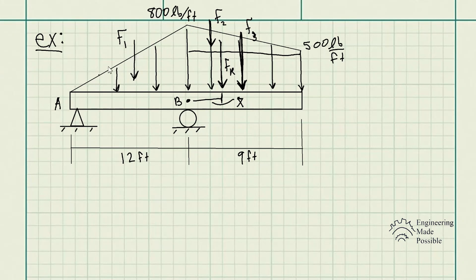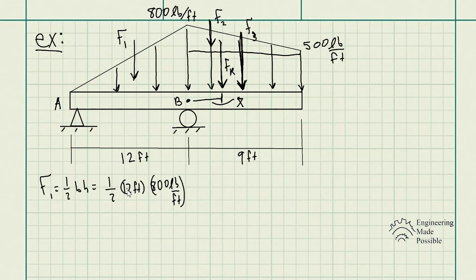Let's solve for F1. Since the area under this curve is the area of a triangle — one-half base times height — we have a height of 800 pounds per foot and a base of 12 feet. So F1 = (1/2) × 12 ft × 800 lb/ft. The feet cancel out and we're left with 4800 pounds — the equivalent force of this distributed loading.